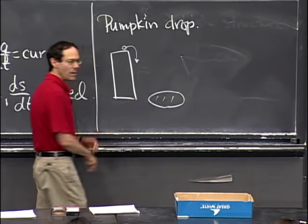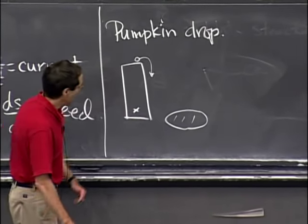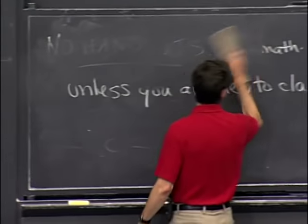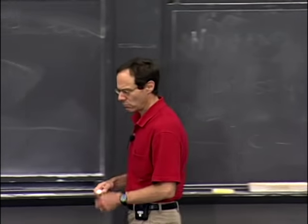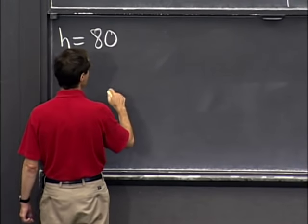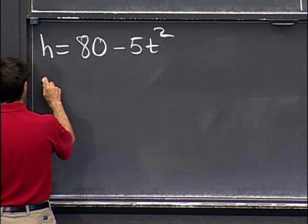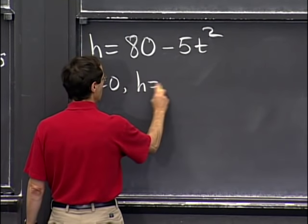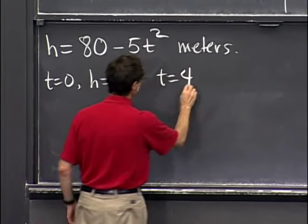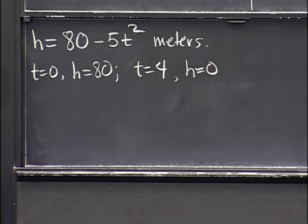The height starts out at 80 meters at time 0. With acceleration due to gravity, the formula for h is h = 80 − 5t². At t = 0 we're at the top; at t = 4, since 5 times 4 squared is 80, we're at the bottom. I picked these numbers conveniently.